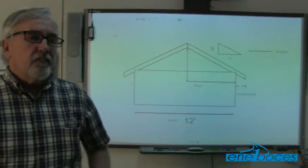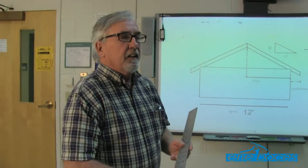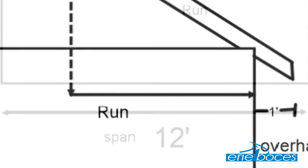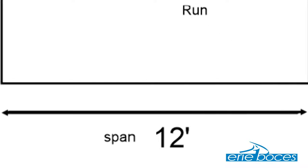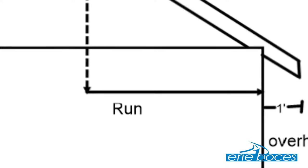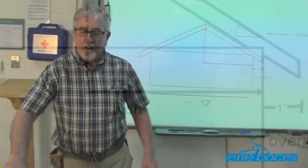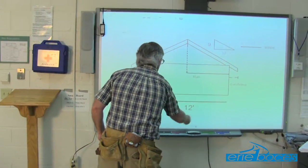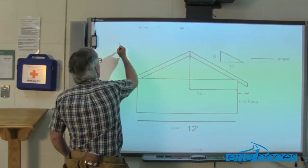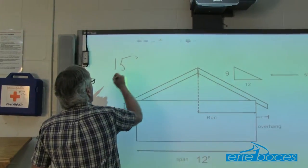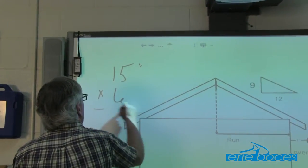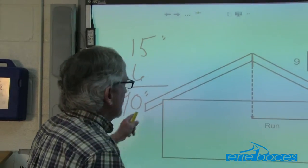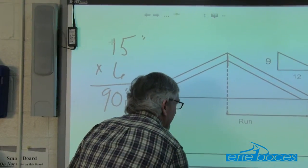The next step is to take your unit line length and multiply it by the run. The run is half the span. We know the span is 12 — that's the width of our building — so the run is 6, which is half of 12. We take 15 and multiply it by 6: 15 times 6 equals 90 inches. That gives us the line length of our common rafter.